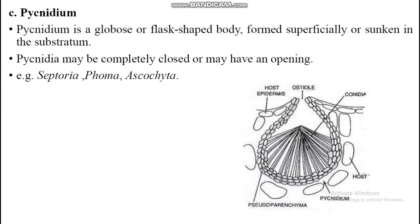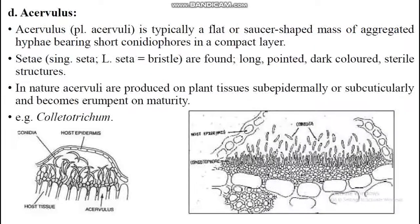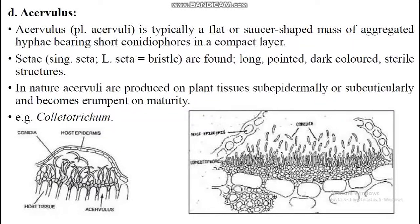Acervulus is the next asexual fruiting body. An acervulus is typically a flat or saucer-shaped mass of aggregated hyphae, bearing short conidiophores in a compact layer, as you can see in the figure.